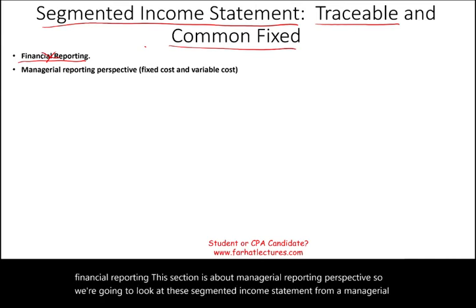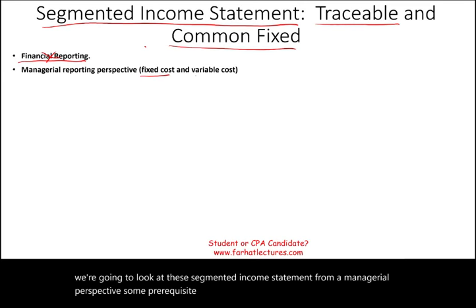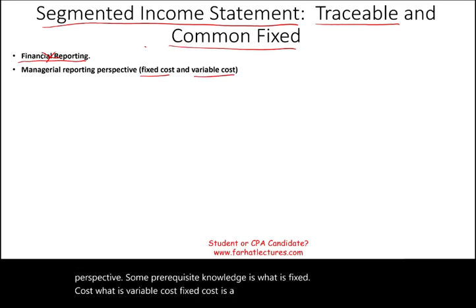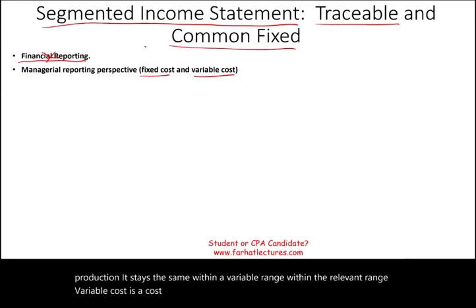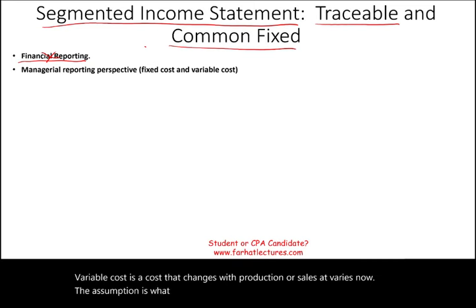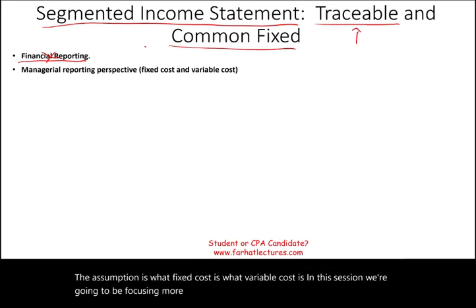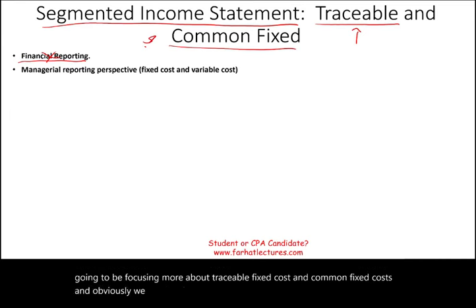Some prerequisite knowledge needed is: what is fixed cost and what is variable cost? Fixed cost is a cost that does not change with production — it stays the same within the relevant range. Variable cost is a cost that changes with production or sales. Assuming you know those concepts, in this session we're going to focus more on traceable fixed cost and common fixed cost.